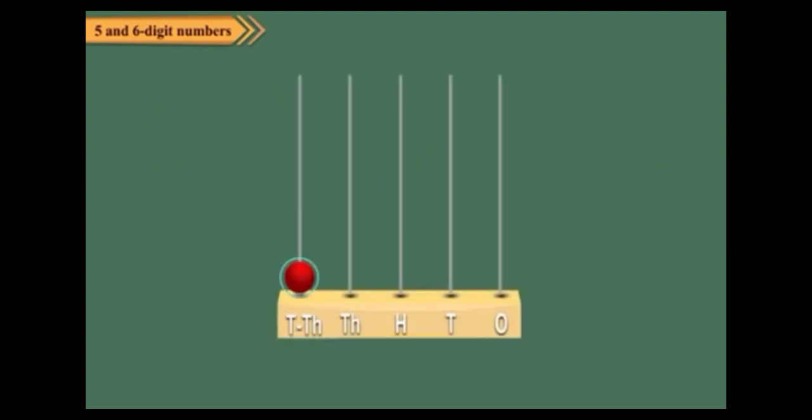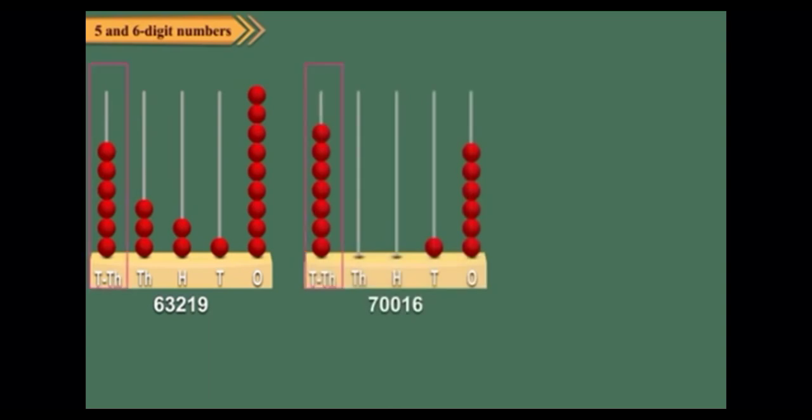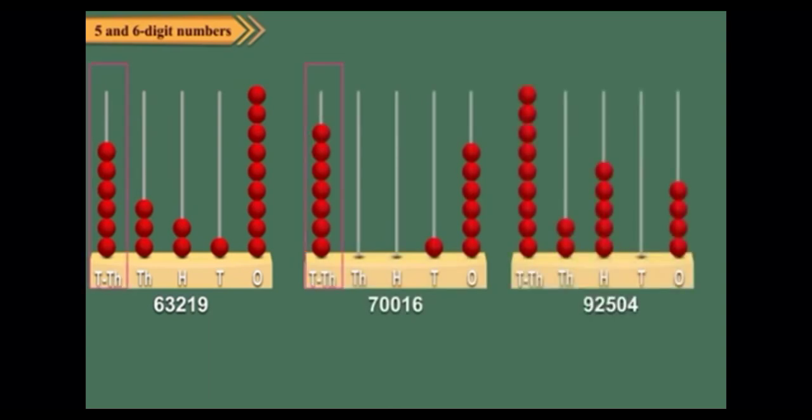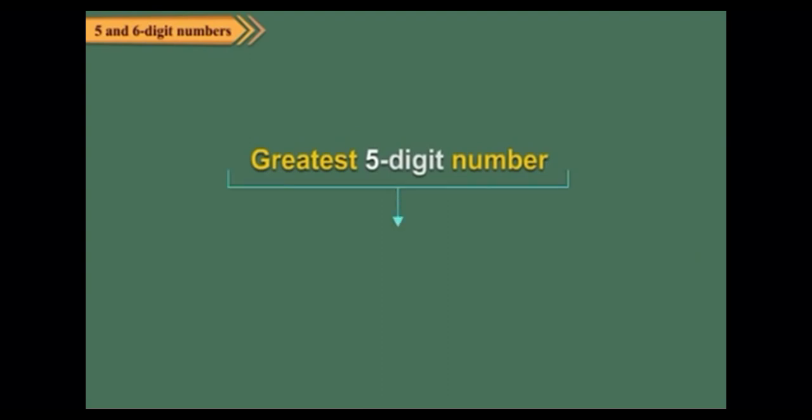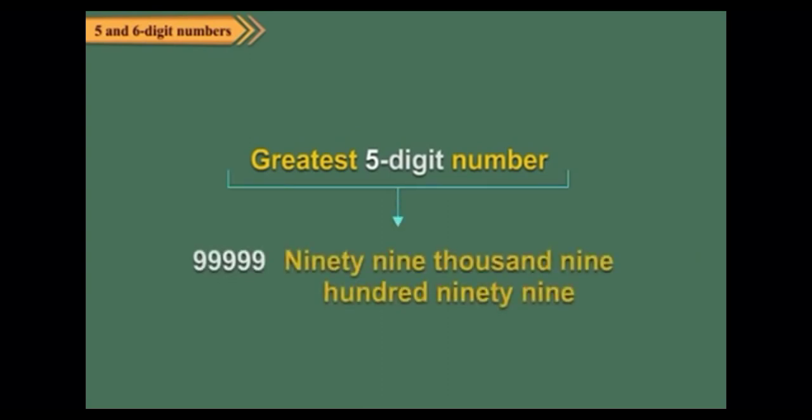We can represent five-digit numbers on the abacus. Here the leftmost spike represents the ten thousand place. The numbers 63,219, 70,000, and 92,504 have been shown on the abacus. The greatest five-digit number is 99,999. Can you read this number?